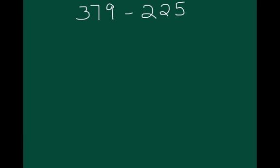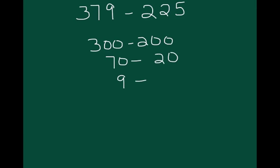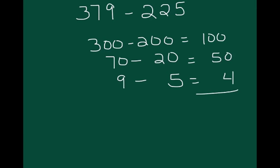Students can use the same procedure using subtraction. So this could be thought of as 300 minus 200, 70 minus 20, and 9 minus 5. Kids are really good with place value because we've worked hard on that in our NBT domain. So now we can see that 100 plus 50 plus 4 equals 154. Is it reasonable? Well, 200 plus 100 would be 379 — yes, it is reasonable.